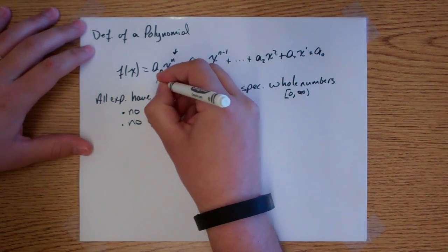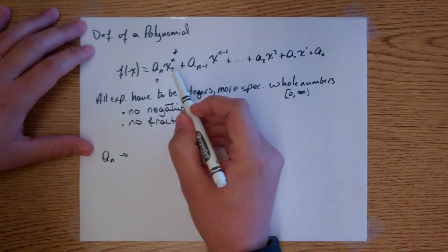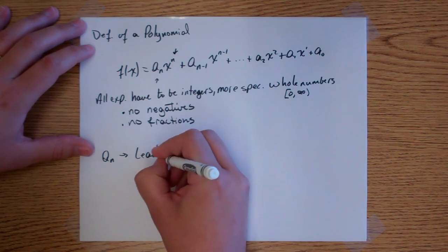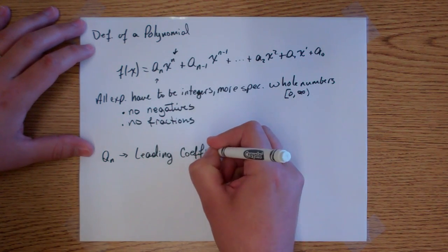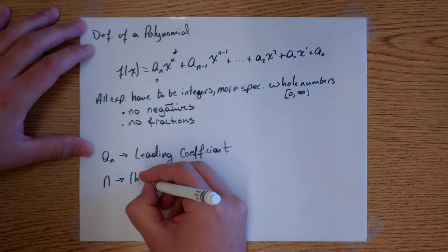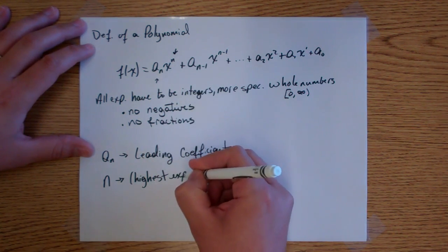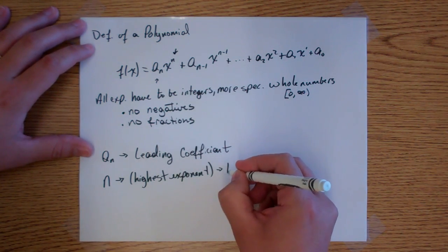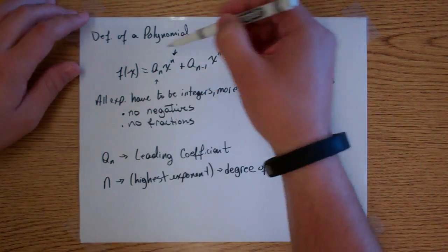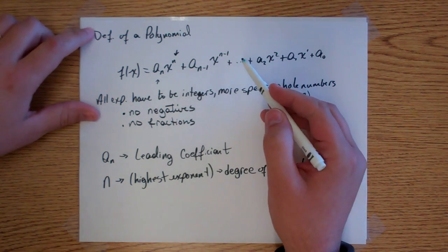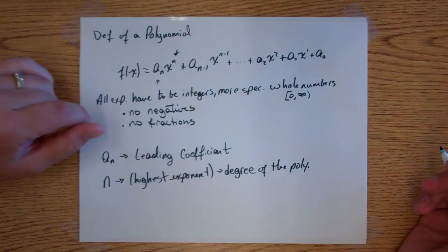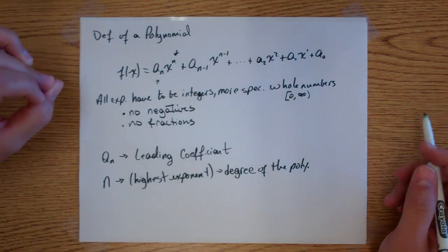Now, this a sub n term — a sub n — which is your coefficient on your variable with the highest exponent, that is called your leading coefficient. And n, which is your highest exponent, that is called your degree of the polynomial. Your leading coefficient can be positive or negative. The only thing that can't be negative are your exponents.